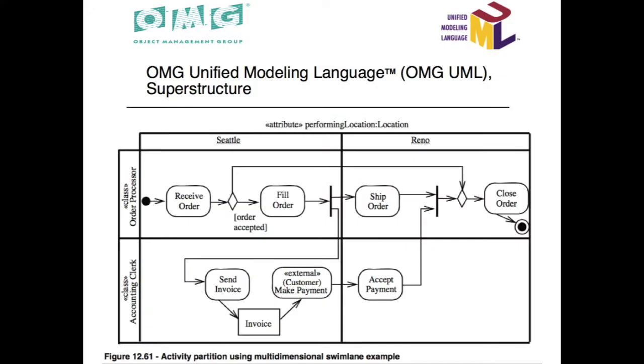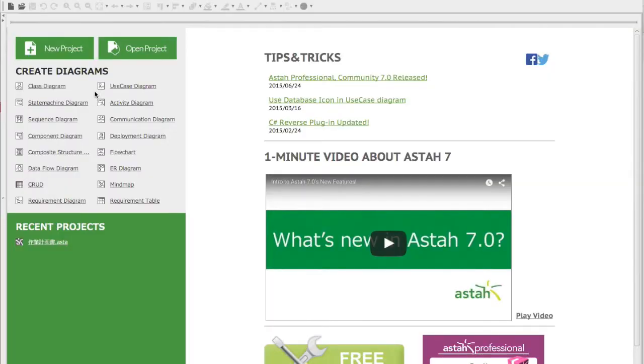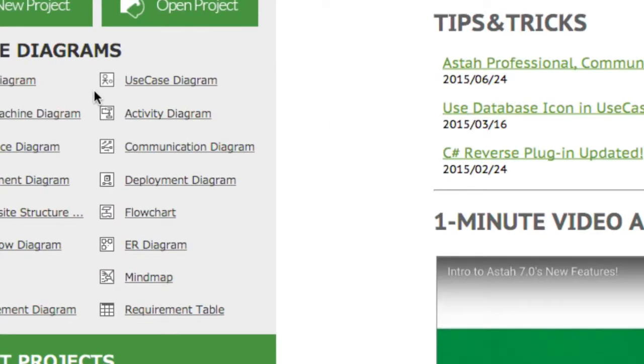I'll show you how to create this UML activity diagram using ASDA. First, click on Activity Diagram on the start screen.